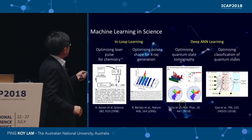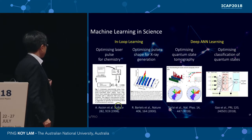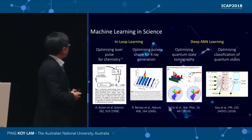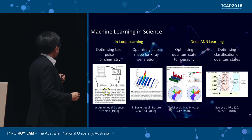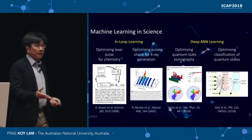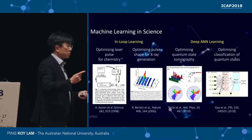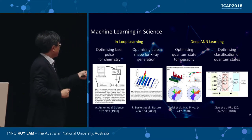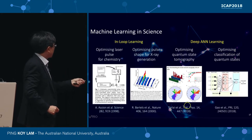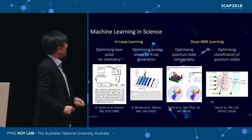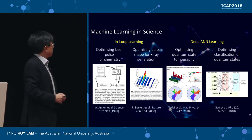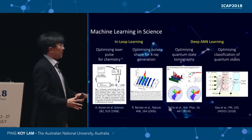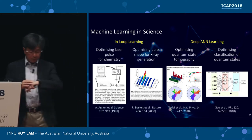Machine learning has also been done in science as early as 1998 and 2000, with papers on in-loop learning using evolutionary nonlinear algorithms as feedback to control experiments. More recently there has been work using artificial neural nets for quantum state tomography and classification of quantum states. What we want to do now is use artificial neural net deep learning in an in-loop situation to optimize our magneto-optical trap.